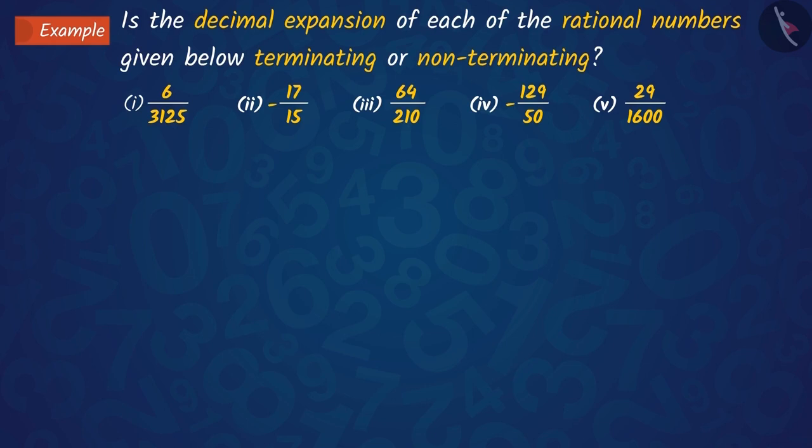Here, without using division, we have to tell which rational numbers have a terminating decimal expansion and which ones have non-terminating decimal expansion. Can you guess how to find this out? Pause the video and try to solve this question.